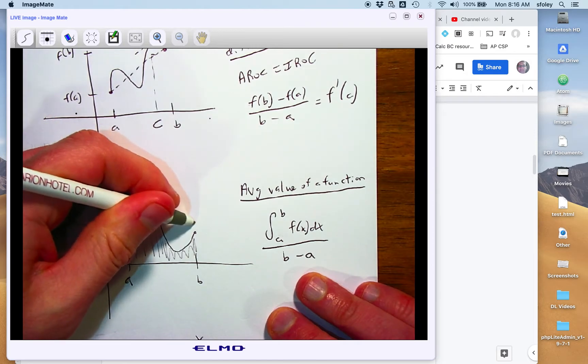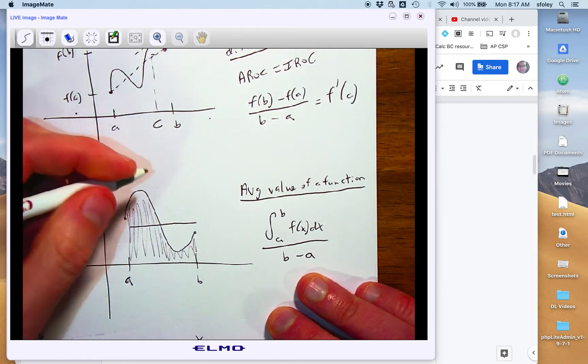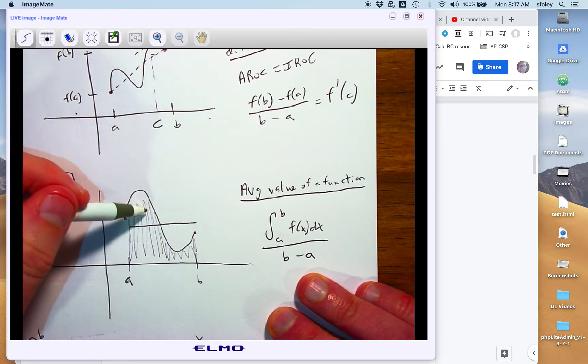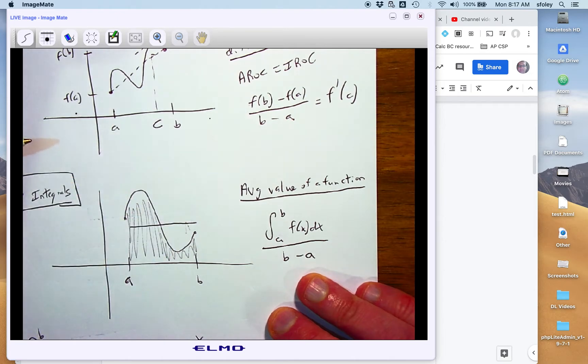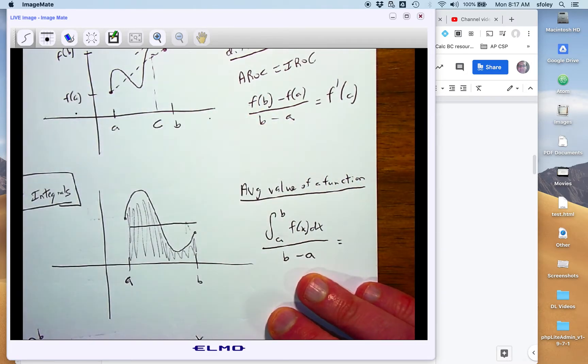And it's a little hard to tell here, but maybe somewhere like this would be the average value. So this area that's above the line gets canceled out by this area that's sort of empty here below the line. And all the mean value theorem for integrals says, which is sort of common sense, is that there is a place.